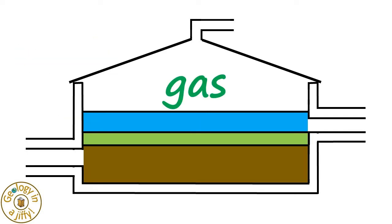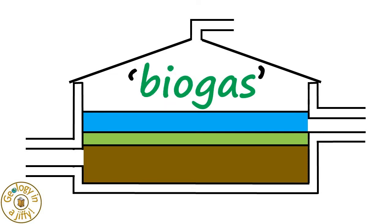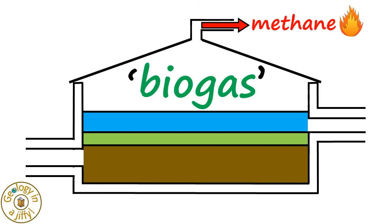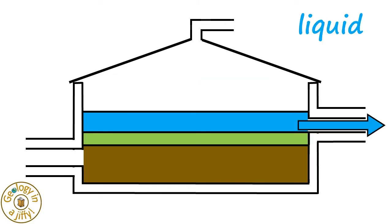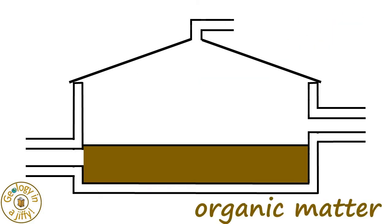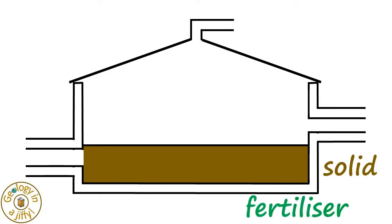Bacteria are added to the mixture, which makes more gas, termed biogas, which is tapped off at the top of the vessel. The main gas collected is methane, which can be directly burnt or used to make electricity. The liquid matter can be used as a liquid fertiliser on fields, as can the more solid organic material at the base of the vessel.